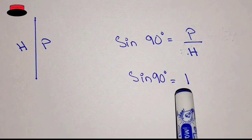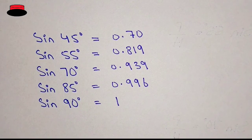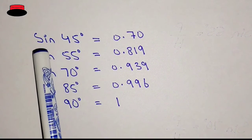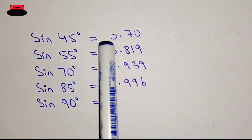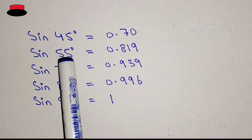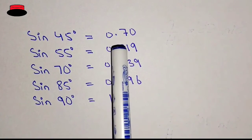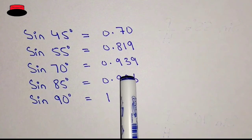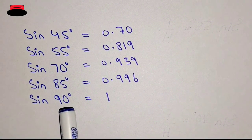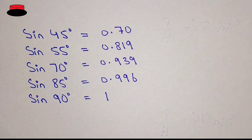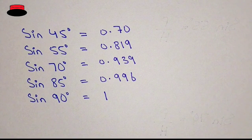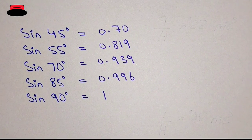Even if you put the value into a calculator — sin 45 degree equals 0.70 — if you keep on increasing the angle, the value will increase as well. So when the angle reaches 90 degree, the value will be 1. That's why sin 90 degree is equal to 1. I hope you understand — thank you for watching this video.